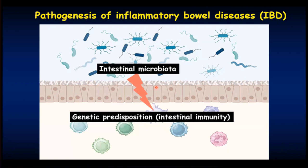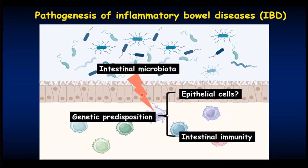Between the microbiota and intestinal immunity, as you can see in this slide, there exists a single layer of the intestinal epithelial cells. We hypothesize that these intestinal epithelial cells have barrier functions that separate the intestinal microbiota and the intestinal immunity.